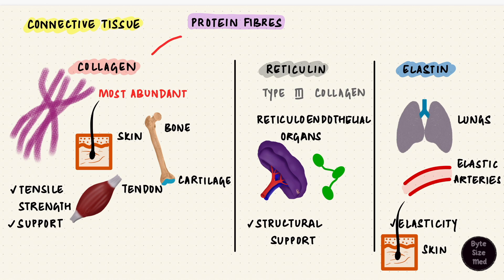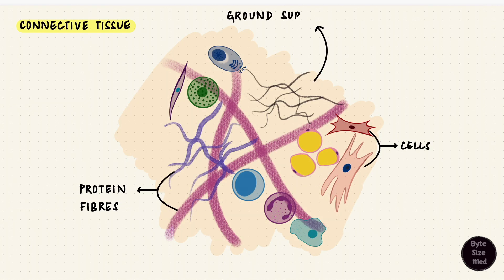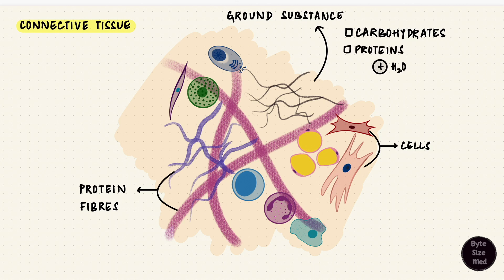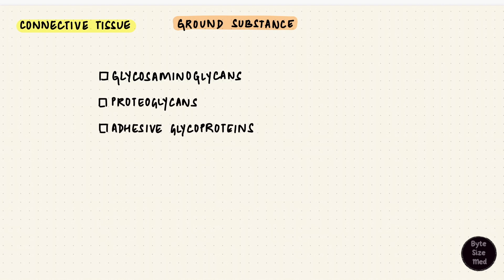These three fibers — particularly collagen — will be discussed in part 2 of this series. But these fibers, along with the cells, are found in the ground substance. The ground substance is made up of carbohydrates and proteins that bind to water, so one of its functions is hydration. It includes glycosaminoglycans, proteoglycans, and adhesive glycoproteins. This can get quite heavy in biochemistry, so let's try to keep it simple.